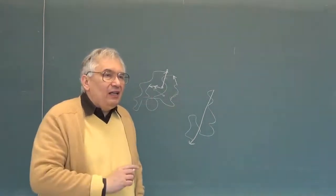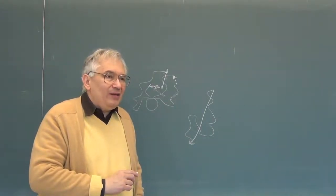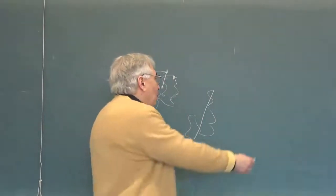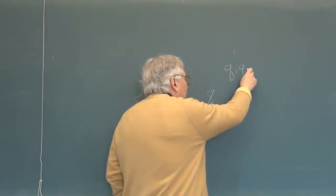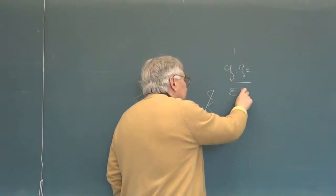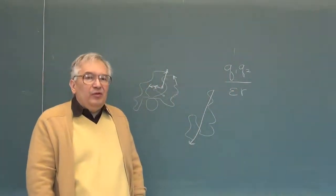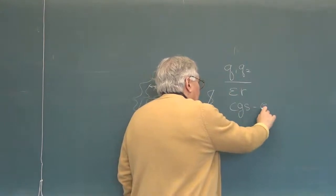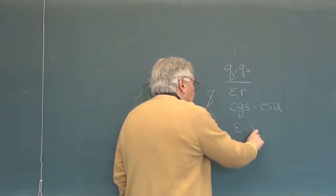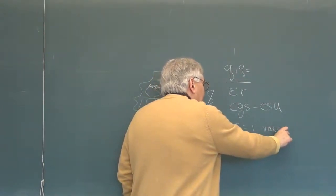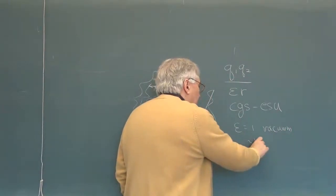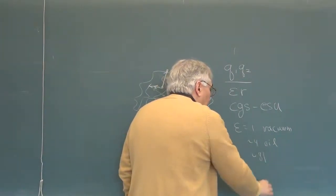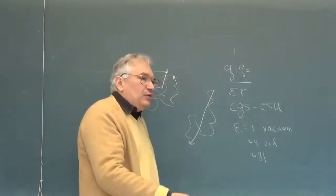On the question of units: if we write the potential energy between two charges in the standard form, we are in CGS ESU units. Epsilon is 1 in a vacuum, about 4 in an oil, and around 80 in water at low frequency, and epsilon is dimensionless. In SI units, you have 4π epsilon-naught in the denominator, and epsilon is no longer 81 but some other number.